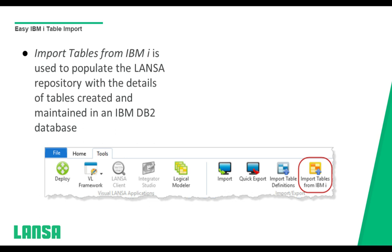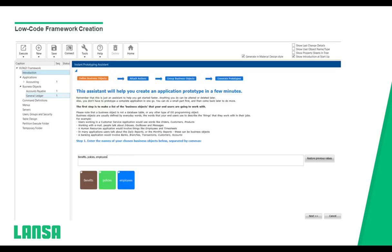Another great feature is importing tables from the IBM i. This populates Lanza's repository — the business rules engine — with details of tables created and maintained in an IBM DB2 database. How many other tools let you import IBM i table definitions with the click of a button? No special connectors, no special setup, no extra software. You make your connection, click import table, type in the table you want from your database, and it imports. Then you can add extra rules to the fields right there in your repository.